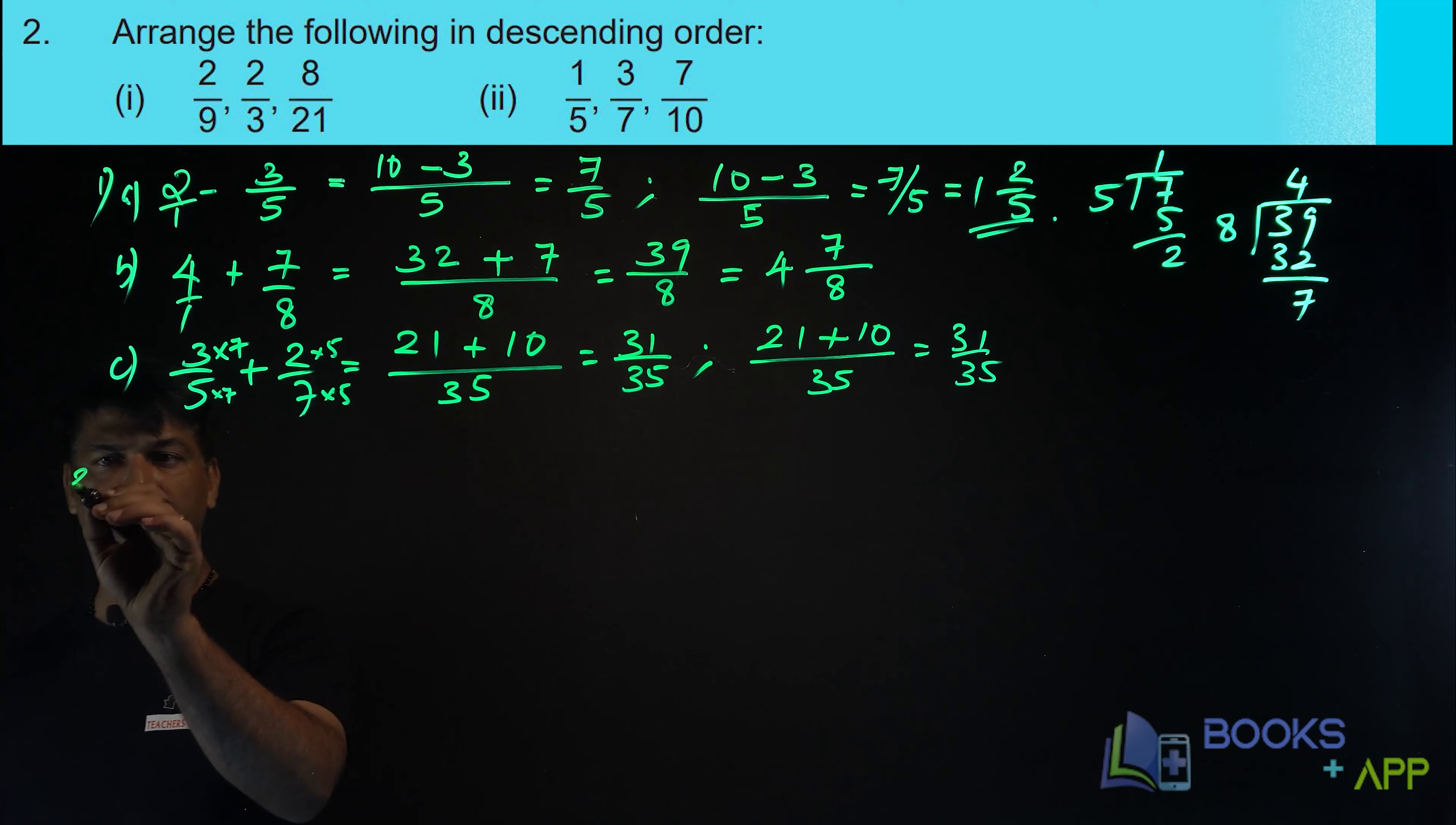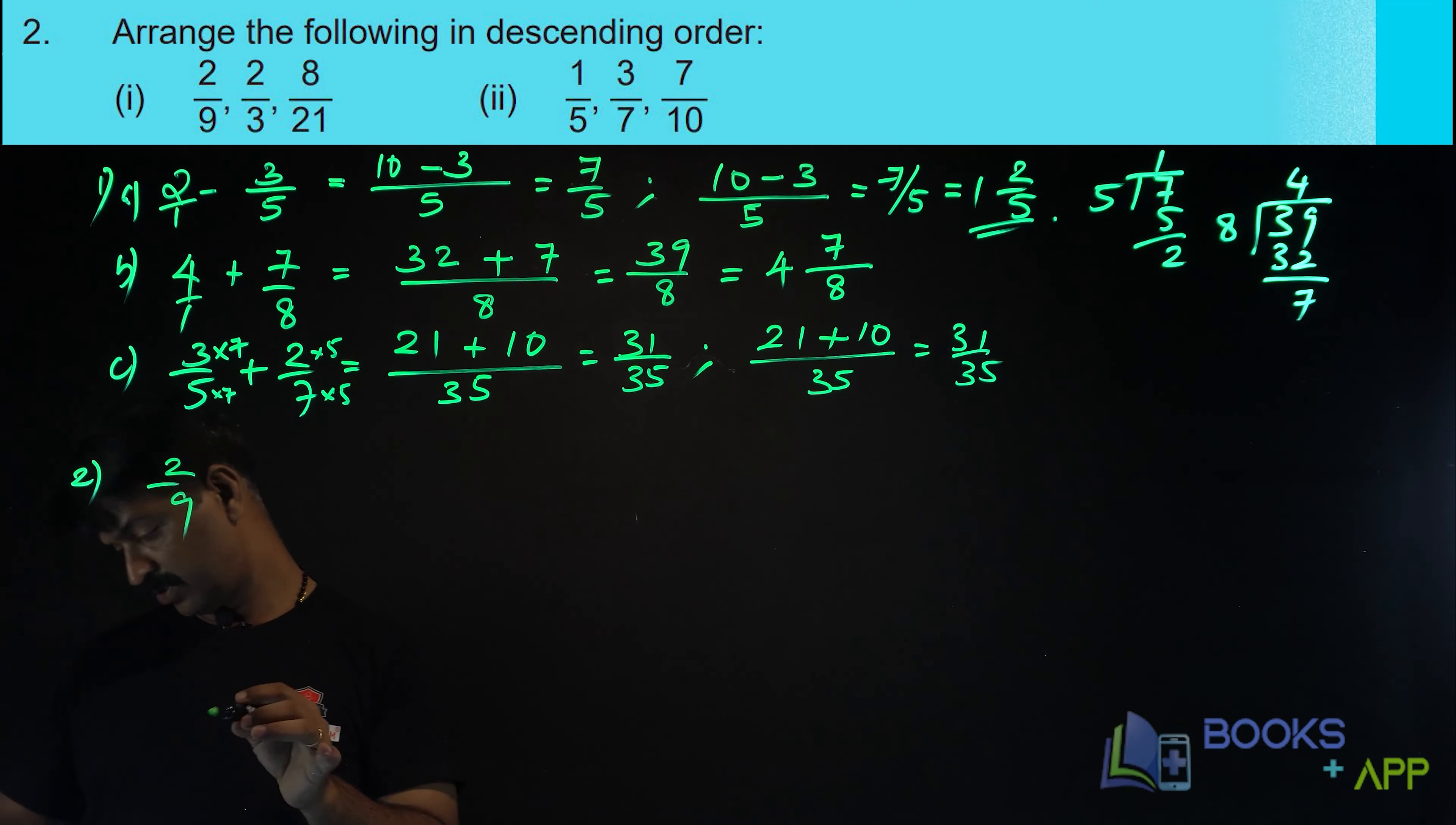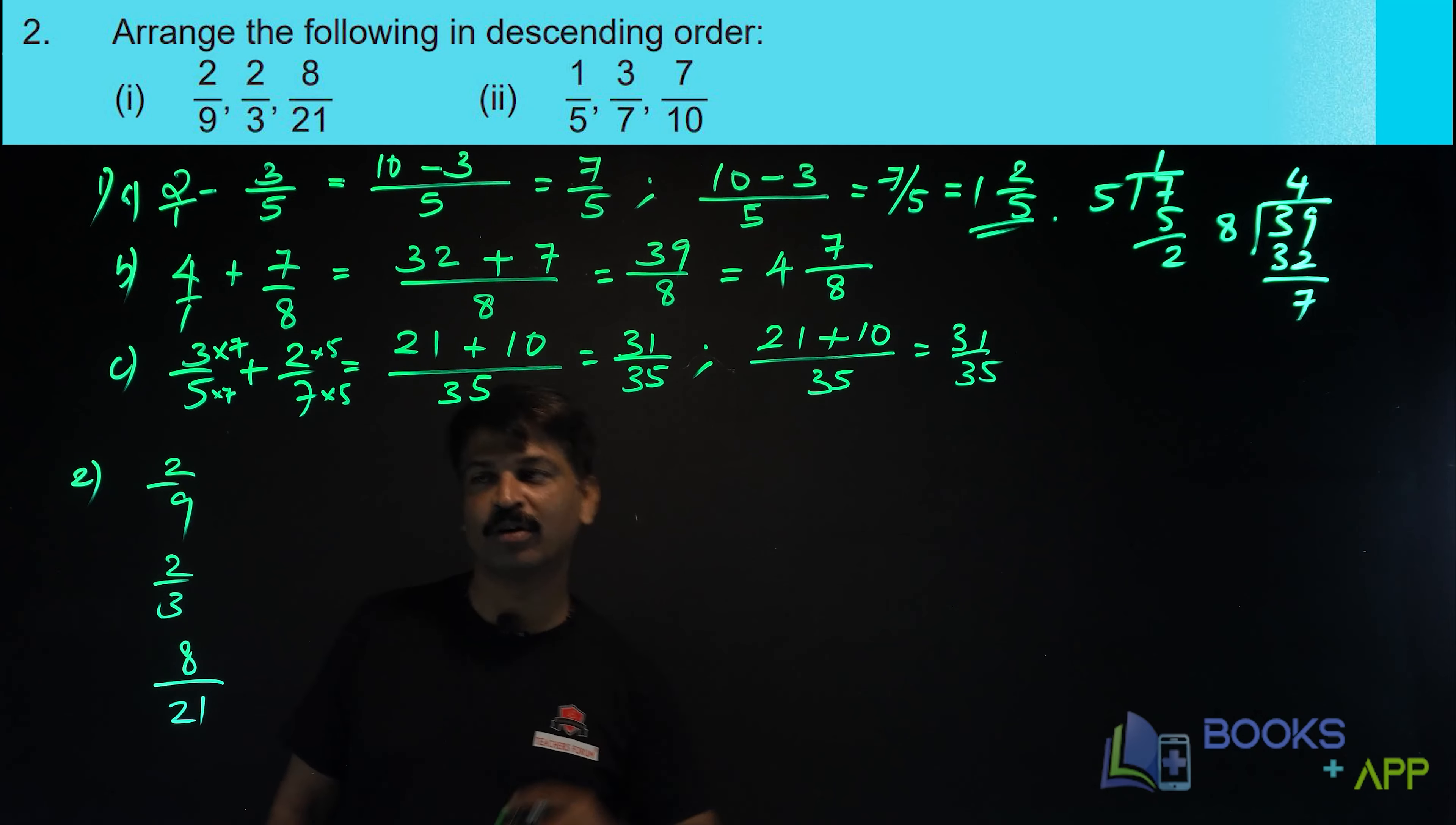Now, let us solve question number 2. Arrange the following in descending order. The numbers given are 2 by 9, then comes 2 by 3, then comes 8 by 21. You have to arrange these numbers in increasing order. Isn't it? Increasing order. Sorry, descending order. Decreasing order, you have to write.